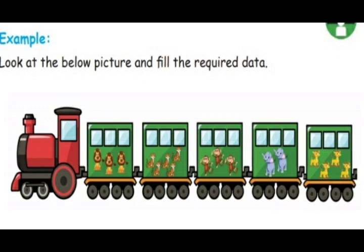Look at the picture and fill in the required data. We can see a train. The train has many compartments. The first one is the engine, which is red in color. Next to the engine, the first compartment has three lions, the next has five tigers, then three monkeys, two elephants, and the last compartment has four giraffes.